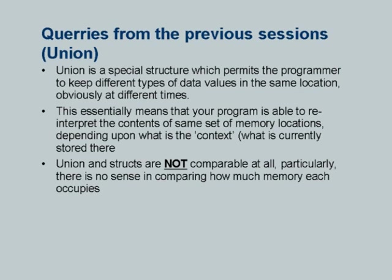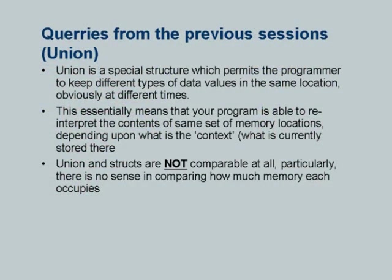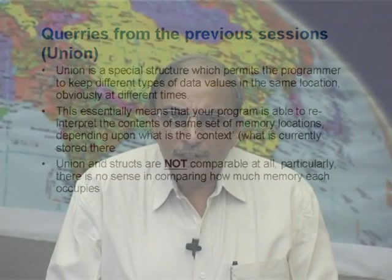The program is able to interpret the data stored in a common location differently depending upon the context or what values are kept inside the allocated memory. Union and structs are not comparable at all — it is wrong to compare them. The purpose is entirely different. When I define a struct, explicit memory is allocated and actual values of the appropriate type can reside in those memory locations as long as we wish.